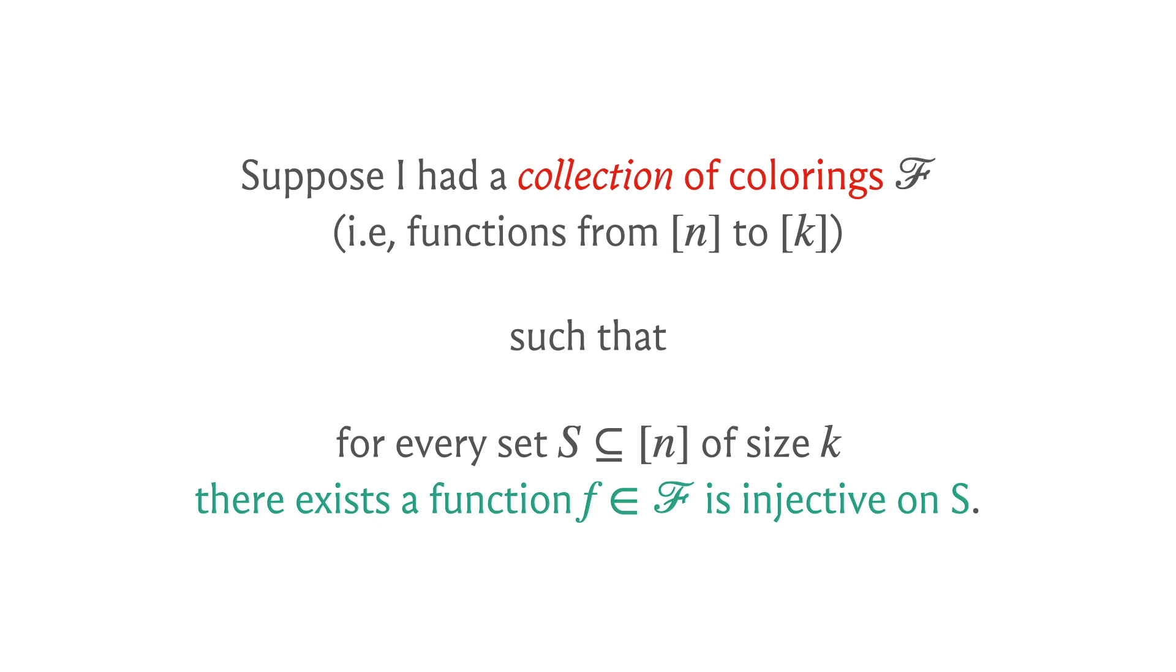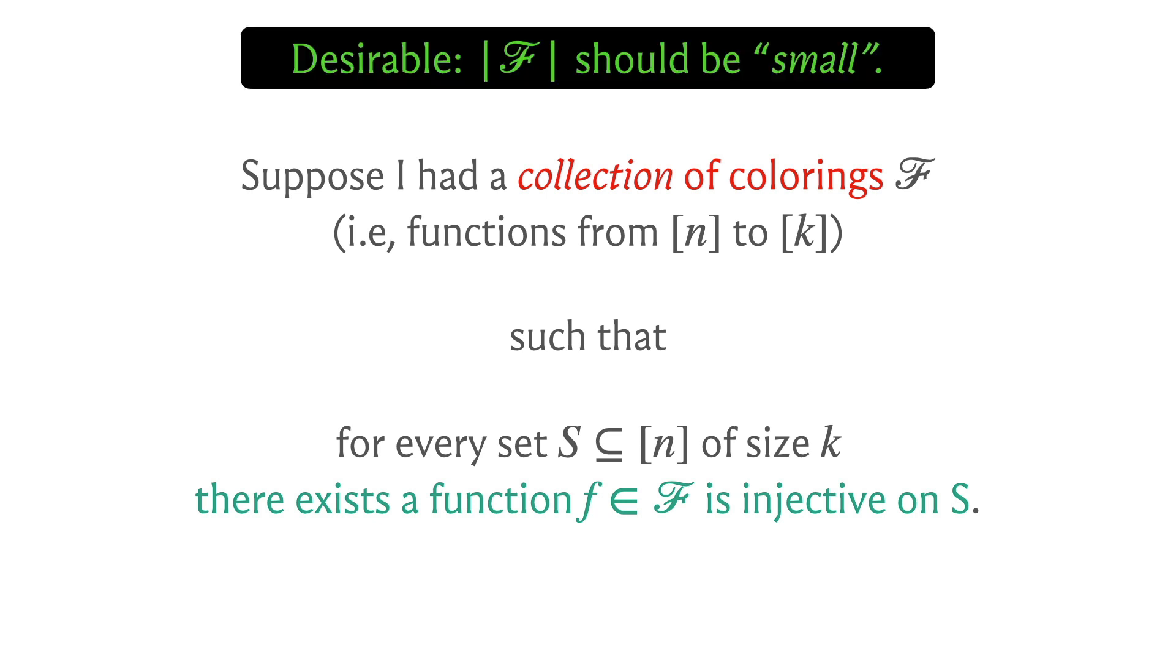Of course, since you're restricting to k vertices and you promised that it's injective, and the range also has size k, it will in fact end up being bijective. But the reason I have used the term injective is to really emphasize that colors don't repeat when you focus on this subset of k vertices. So the crucial thing of course was the first thing that we mentioned, which is that we want this collection of colorings to be small.